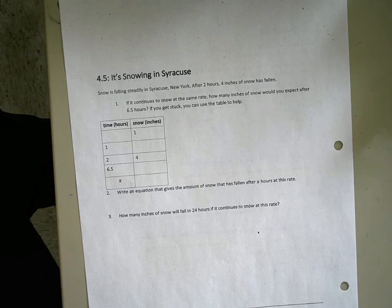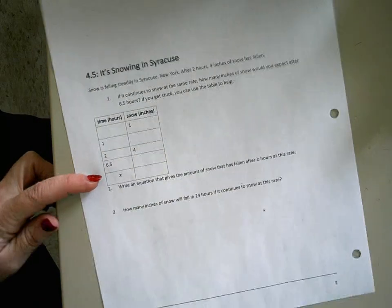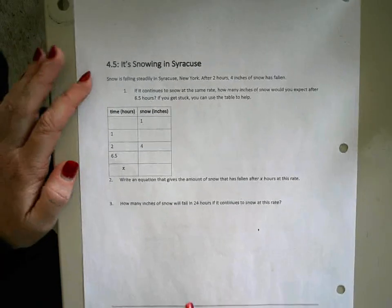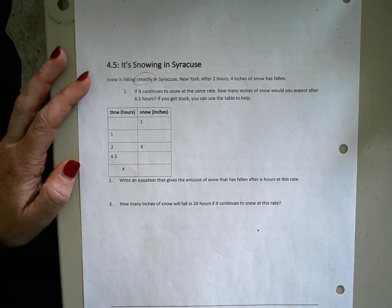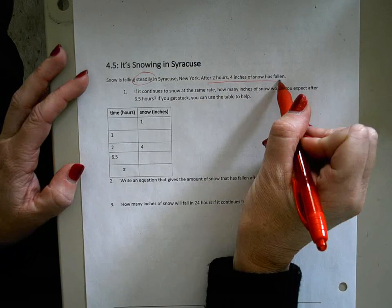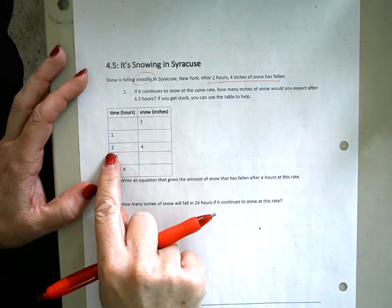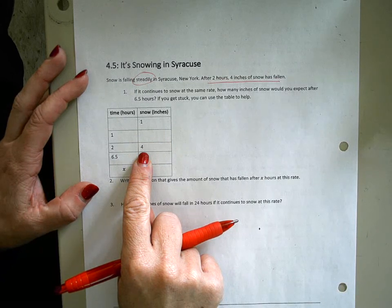Then how to use that to write an equation and then how to use your equation to find a further answer. Snow is falling steadily, so that means at a constant rate in Syracuse, New York. After two hours, four inches of snow has fallen, so that information is given in the table. If it continues to snow at this rate, how many inches of snow would you expect after six and a half hours?